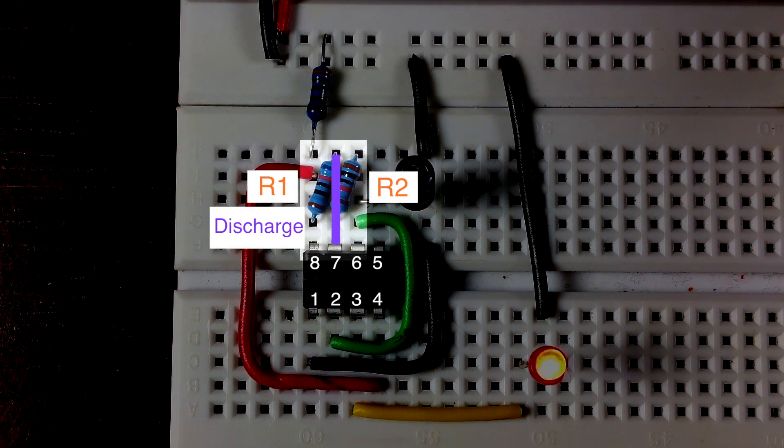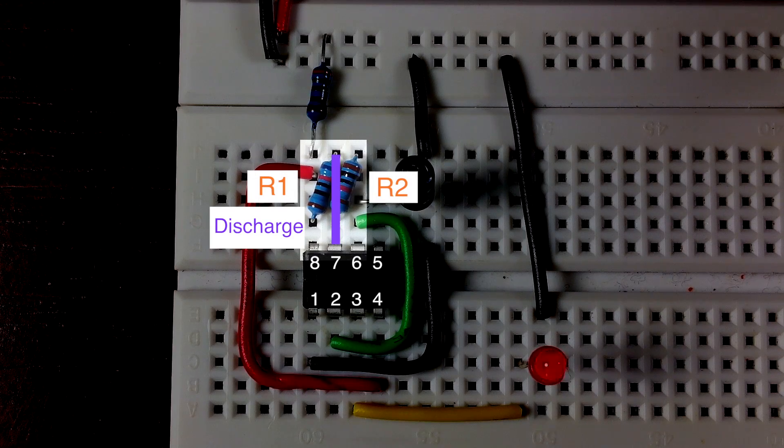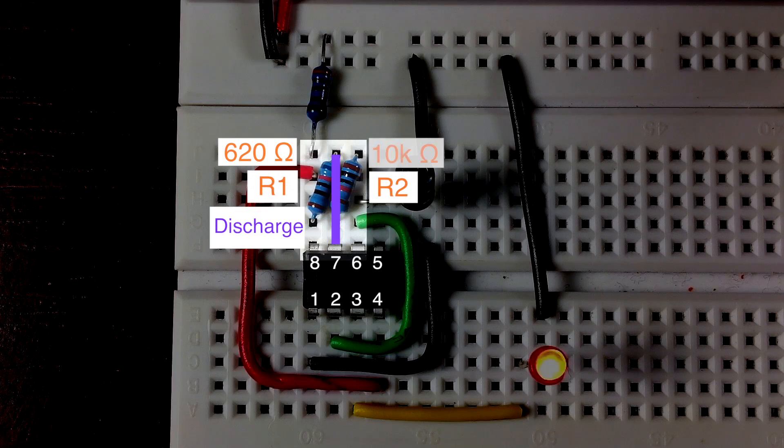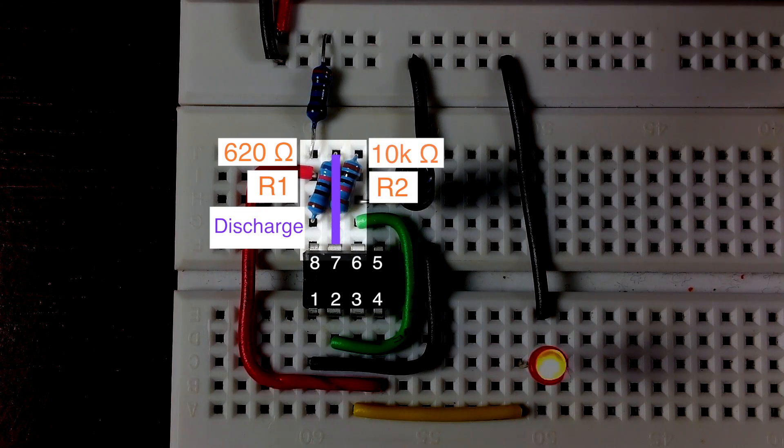Next, we connect the first resistor between pin 8 and the discharge at pin 7, and then connect the second resistor between pin 7 and the threshold at pin 6. Here I am using a 620 ohm resistor for R1 and a 10,000 ohm resistor for R2.